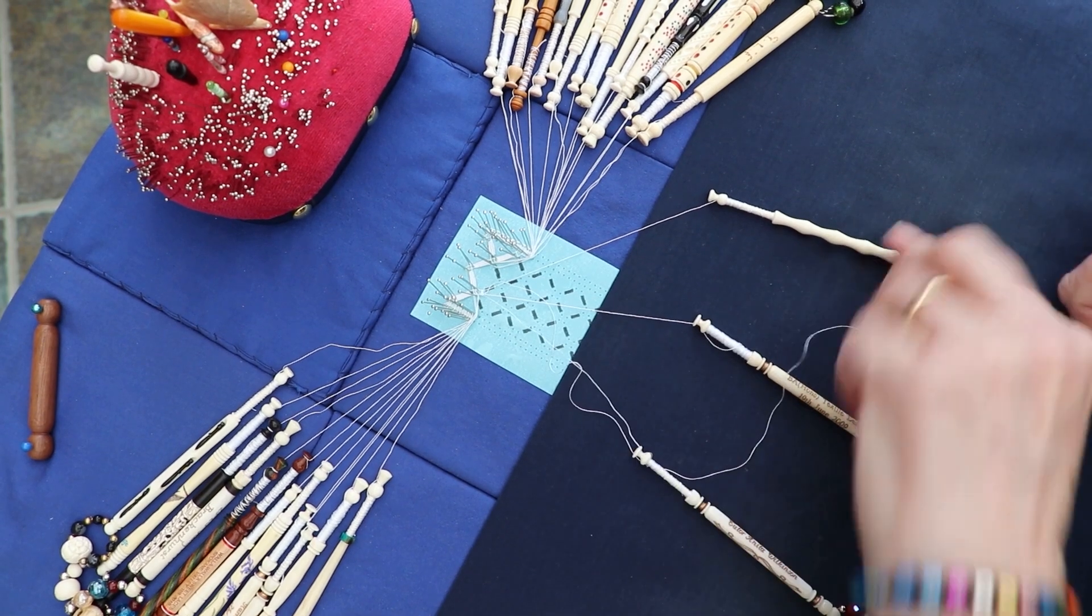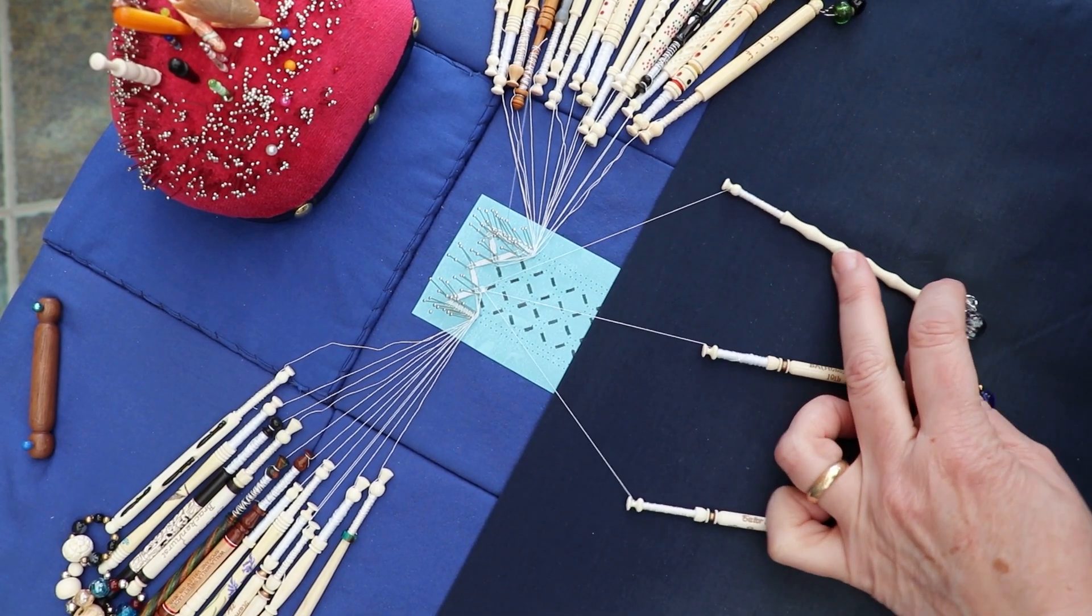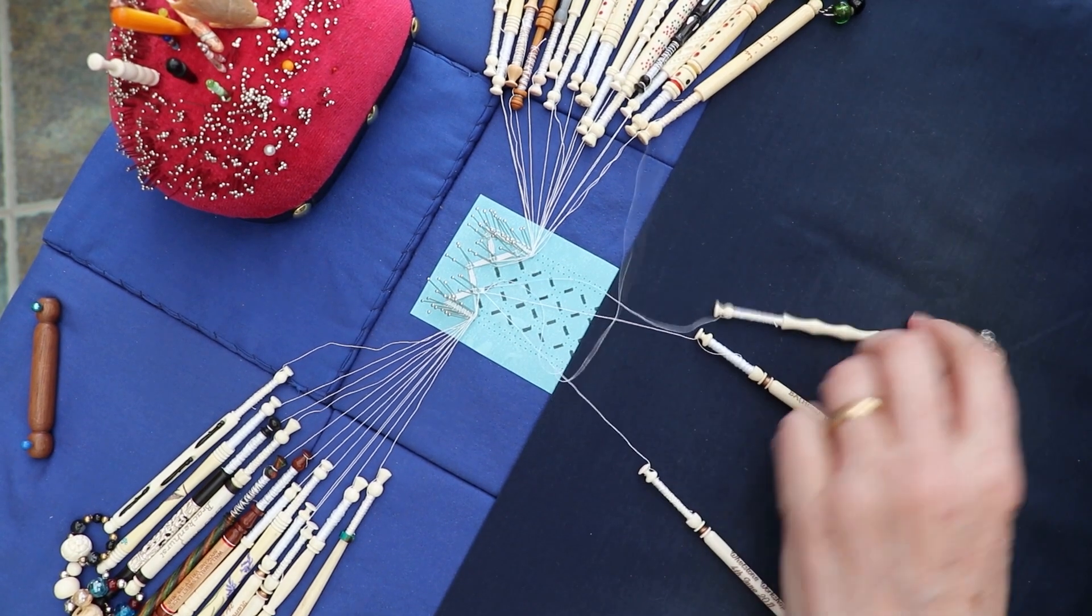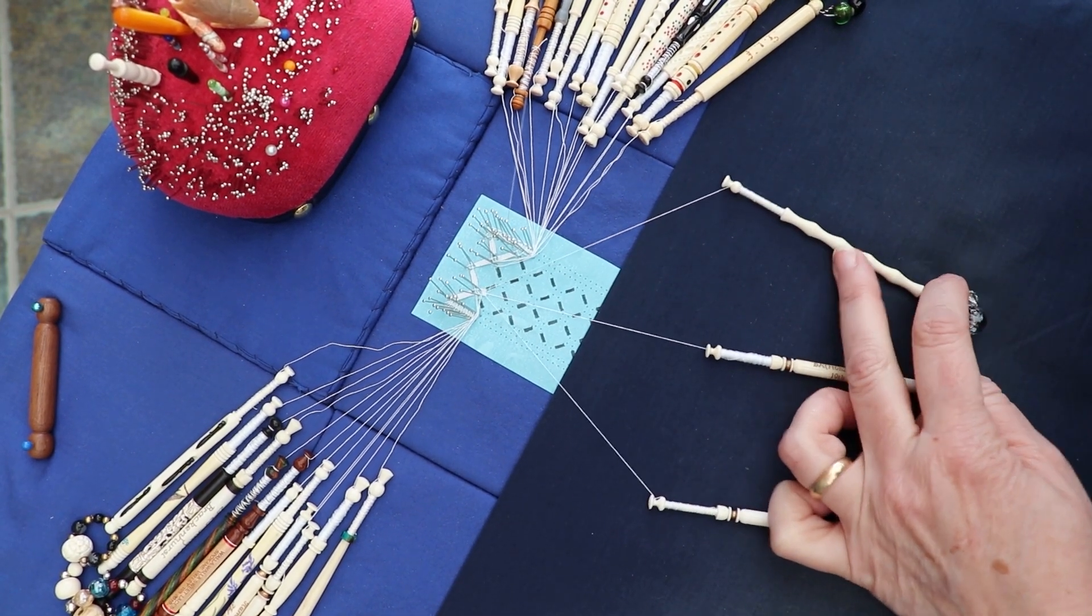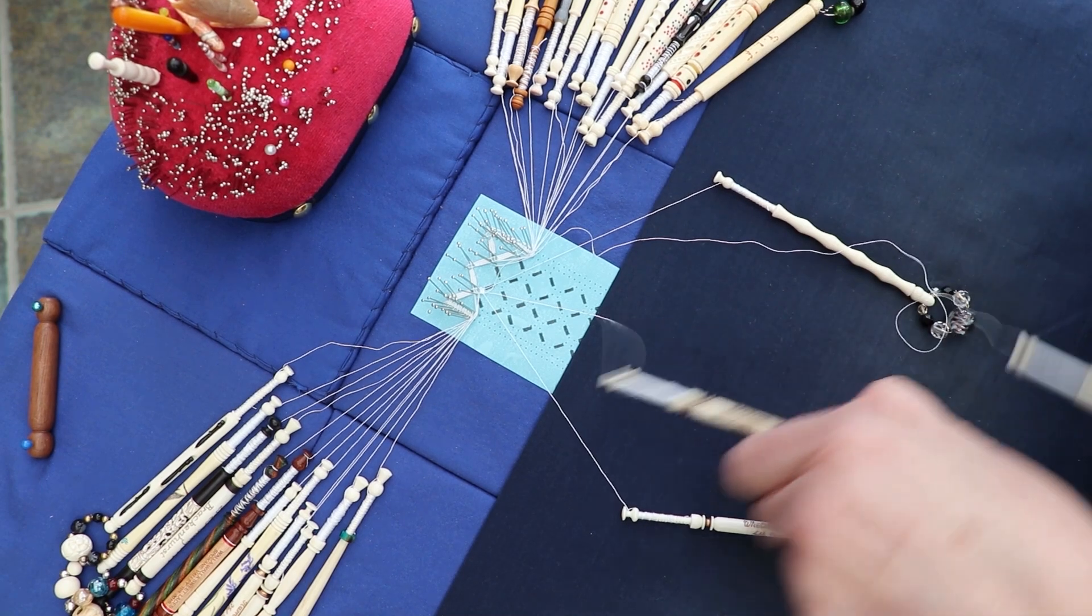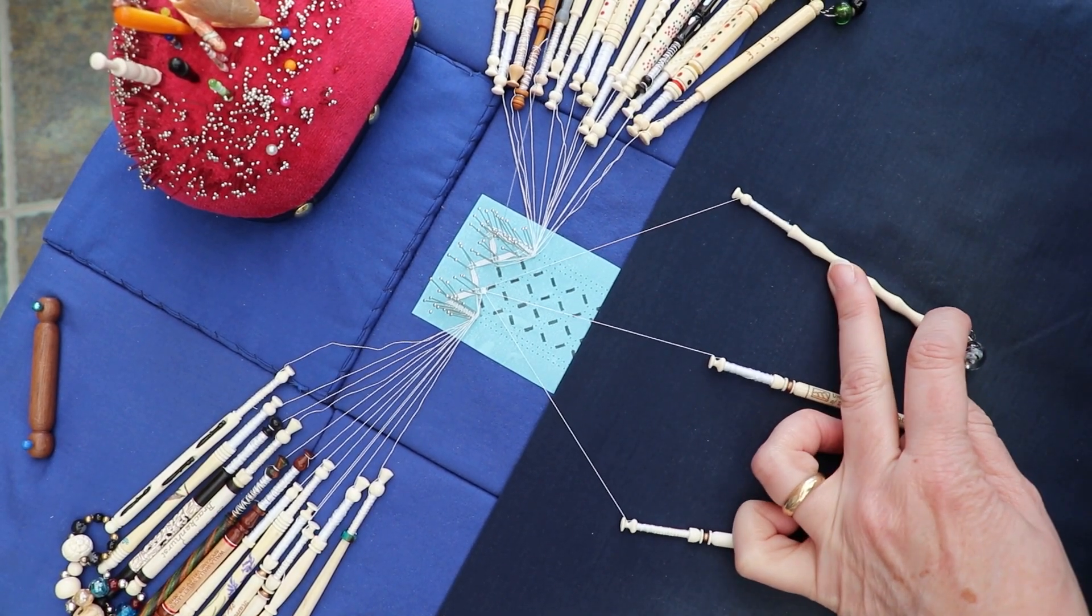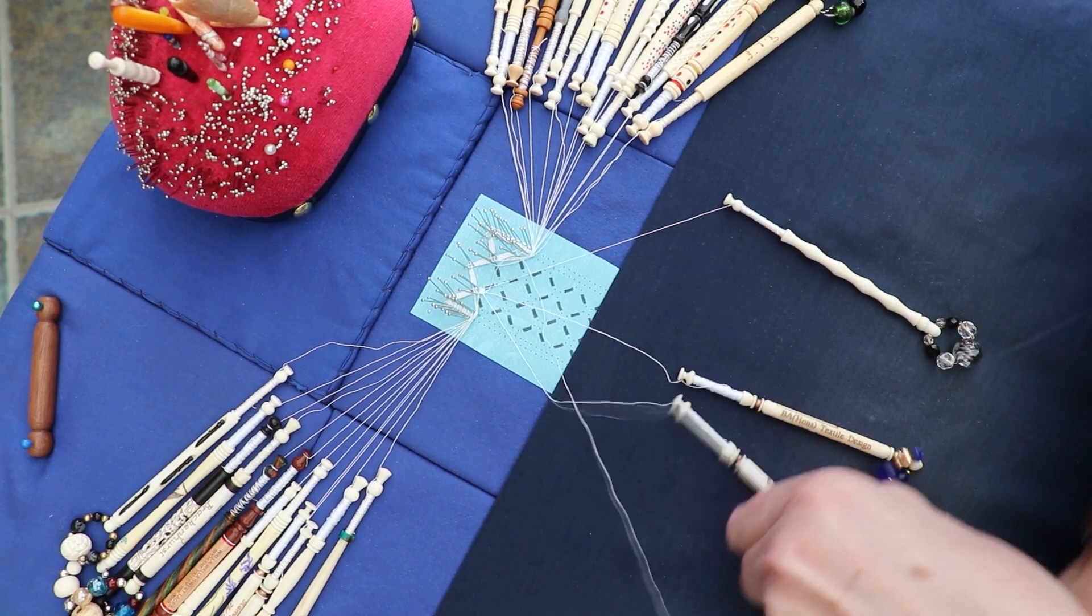I've just zoomed out a little bit so you can actually see what's happening with my hands. I'm holding the outside ones and keeping those quite tight when I tension them to maintain the straight parallel sides of the tally. It's particularly the outside ones that you need to pay that attention to.